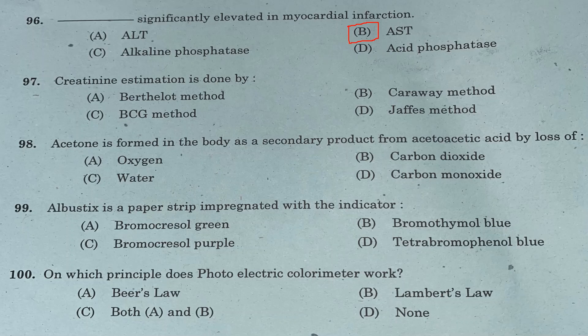Question 97: Creatinine estimation is done by — Option A: Berthelot method. Option B: Caraway method. Option C: BCG method. Option D: Jaffe's method. Answer is Option D, Jaffe's method.